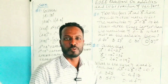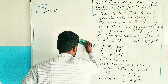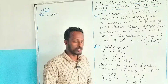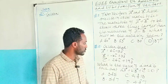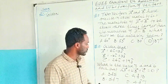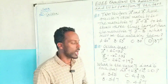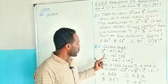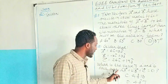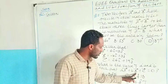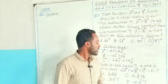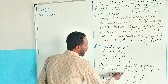Let's proceed to the second question. Given that vector a equals 6i minus 8j, vector b equals minus 8i plus 3j, and vector c equals 26i plus 19j. What is the value of a and b such that a times vector A plus b times vector B plus vector C equals zero?